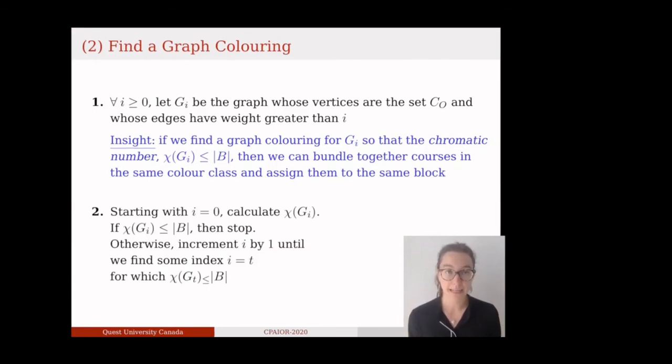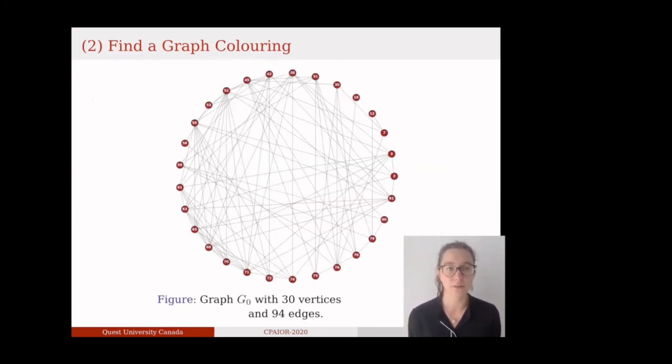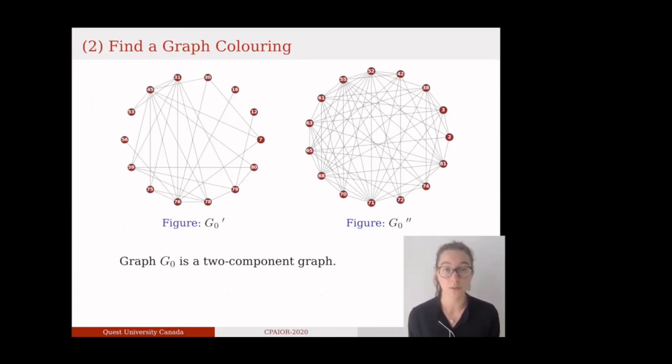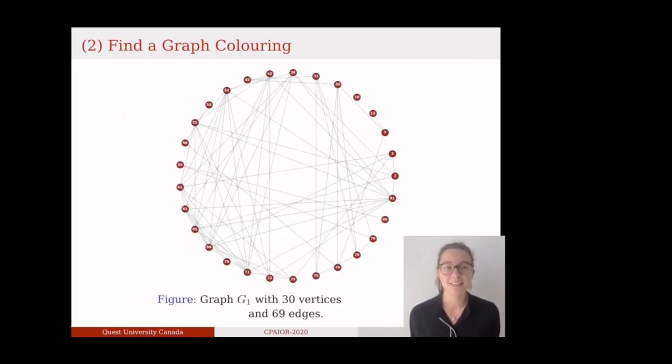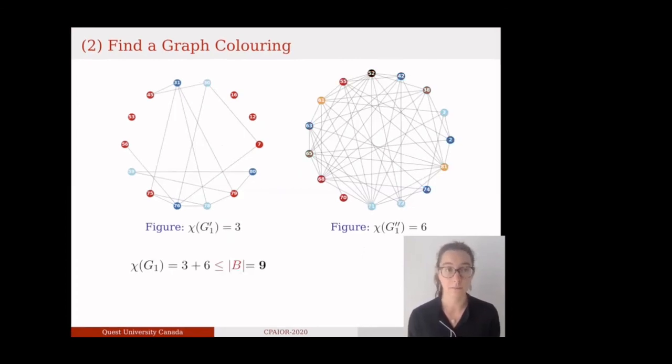Visually, start from graph G_0. Notice that G_0 is a two-component graph because short courses that ought to be scheduled in blocks 1, 2, and 3 are disjoint from long courses that ought to be scheduled in blocks 4 through 9. Our program determined that the chromatic number of G_0 is 5 plus 7, which is 12, which is greater than 9, the total number of blocks available. So, let G_1 be the same graph as G_0, except we only include edges with weight greater than 1. Then G_1 becomes a graph with 30 vertices and 69 edges, whose chromatic number is 3 plus 6, which is exactly 9. This is a satisfactory coloring.